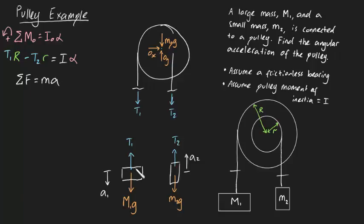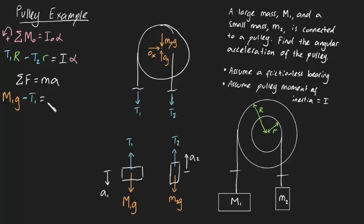Applying Newton's second law to the large block M1: because it's accelerating downwards, I define positive as downwards. So M1G minus T1 equals M1 times A1. This is equation two. Now applying the sum of forces equals MA for the smaller block M2: T2 is positive (upward) and M2G is negative (downward), giving T2 minus M2G equals M2 times A2. This is equation three.